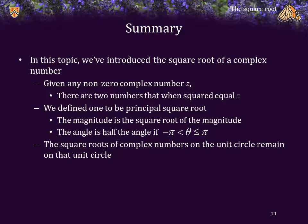In this topic, we've introduced the square root of a complex number. Given any non-zero complex number z, there are two numbers that, when squared, equal z. We define one to be the principal square root — that is, it's the square root of the magnitude of the number we're finding the square root of, and the angle is half the angle if the angle is between negative pi and pi. We also saw that the square roots of complex numbers on the unit circle remain on that unit circle.